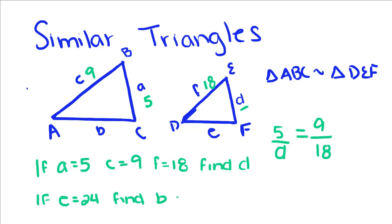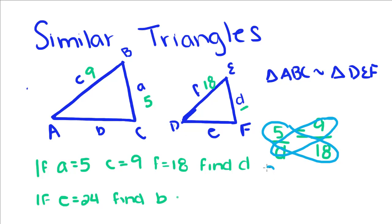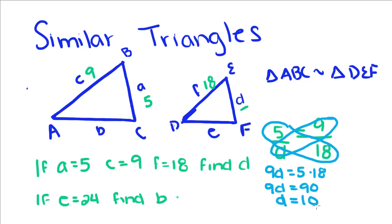So just like we would solve a normal proportion, we're going to cross multiply, and we're going to get 9D is equal to 5 times 18. So 9D equals 90, divide both sides by 9, you get D equals 10.